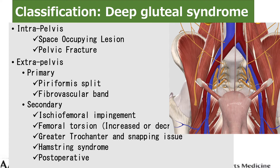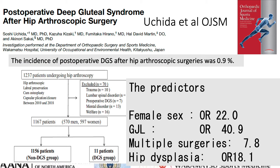Deep gluteal syndrome is classified according to location: intrapelvic and extrapelvic. DGS is also classified according to mechanism: primary and secondary. Primary DGS includes piriformis split and fibrovascular bands. Secondary DGS includes ischiofemoral impingement, femoral torsion, greater trochanter and snapping issues, hamstring syndrome, and postoperative DGS. Our study reported postoperative DGS after hip arthroscopic surgeries, with an incidence of 0.9%. Predisposing factors for postoperative DGS include female sex, generalized joint laxity, multiple surgeries, and hip dysplasia.